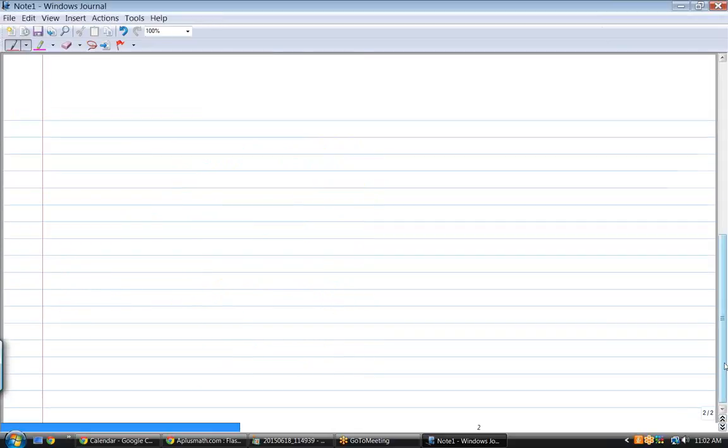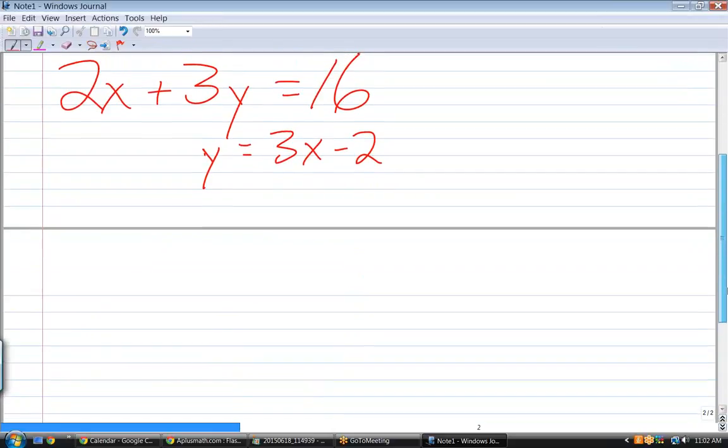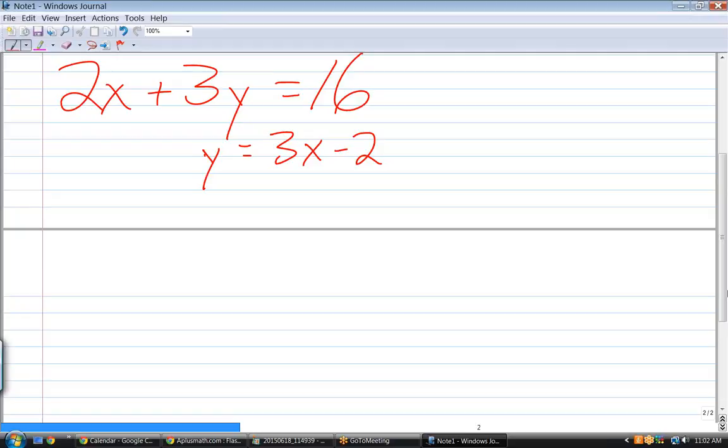Now, we have two equations and two variables. Any idea as to how we would solve this? I'm labeling what we have here. Equation one is the top one, equation two is the bottom one.